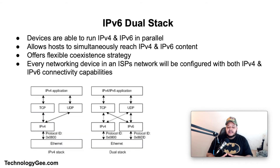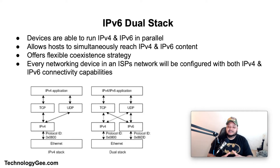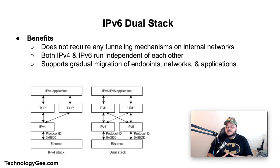IPv6 dual stack means that devices are able to run IPv4 and IPv6 in parallel, allowing hosts to simultaneously reach both IPv4 and IPv6 content. It offers a flexible coexistence strategy — with dual stack, every networking device, server, switch, router, and firewall in an ISP's network is configured with both IPv4 and IPv6 connectivity. Benefits include: no tunneling mechanisms required on internal networks, both protocols run independently of each other, and dual stack supports gradual migration of endpoints, networks, and applications.